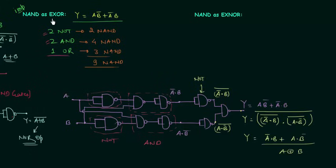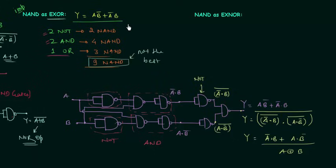We have implemented the XOR gate using nine NAND gates, but this is not the best way. We can implement the XOR gate by using only four NAND gates. Here we are using five extra NAND gates, so let's see what is redundant in this circuit.